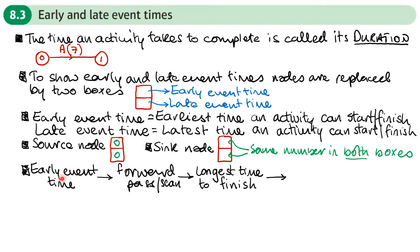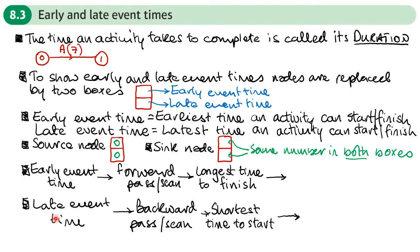To work out the early event time, we perform a forward pass or forward scan, working out the longest time to finish an activity. For the late event time, we perform a backward pass or scan, finding the shortest time to start an activity. A helpful phrase to remember: forward — high; backward — low.